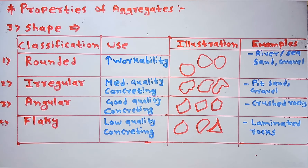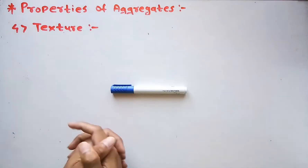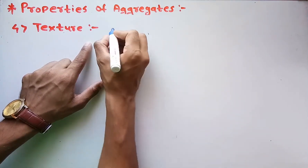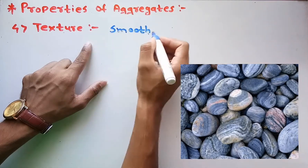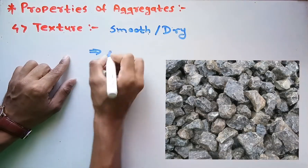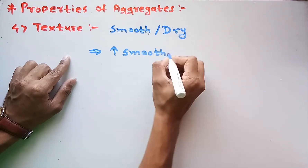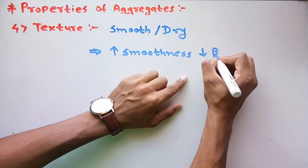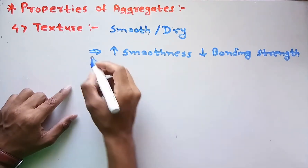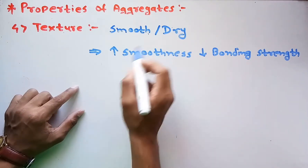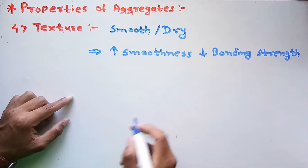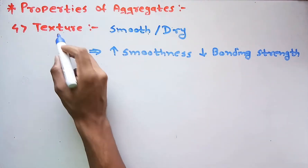The next property is texture. Texture is the property of aggregate which deals with the surface area — whether it is smooth or rough. Higher smoothness means lower bonding strength. In construction work, we always prefer rough or dry texture aggregates to obtain good bonding strength, which results in increased strength of the overall mortar or concrete.